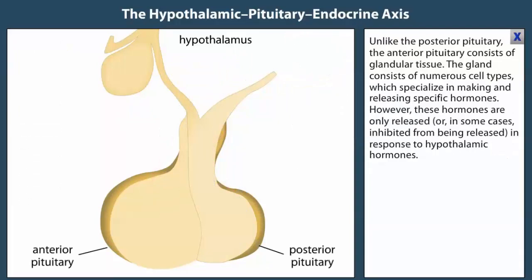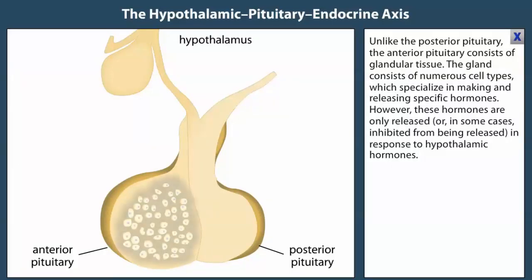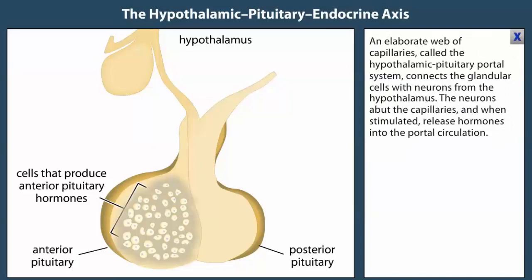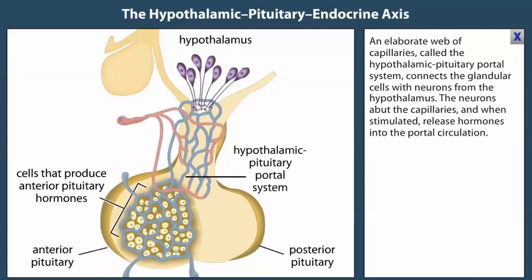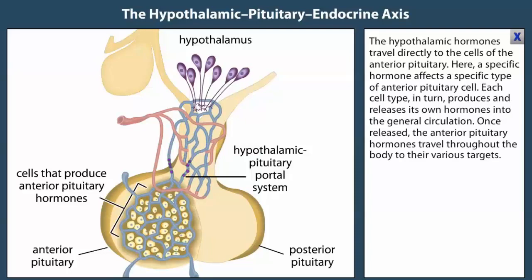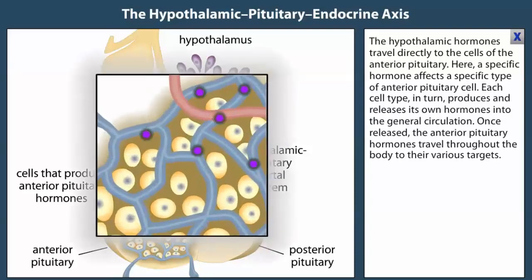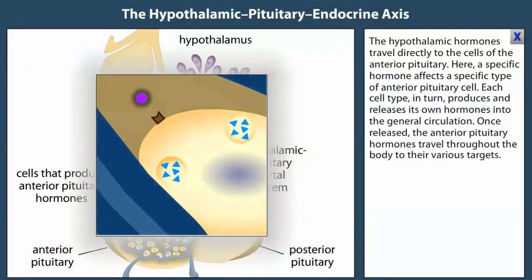Unlike the posterior pituitary, the anterior pituitary consists of glandular tissue. The gland consists of numerous cell types which specialize in making and releasing specific hormones. However, these hormones are only released — or in some cases inhibited from being released — in response to hypothalamic hormones. An elaborate web of capillaries called the hypothalamic-pituitary portal system connects the glandular cells with neurons from the hypothalamus. When stimulated, the neurons release hormones into the circulation, which travel directly to the cells of the anterior pituitary, where a specific hormone affects a specific type of anterior pituitary cell.